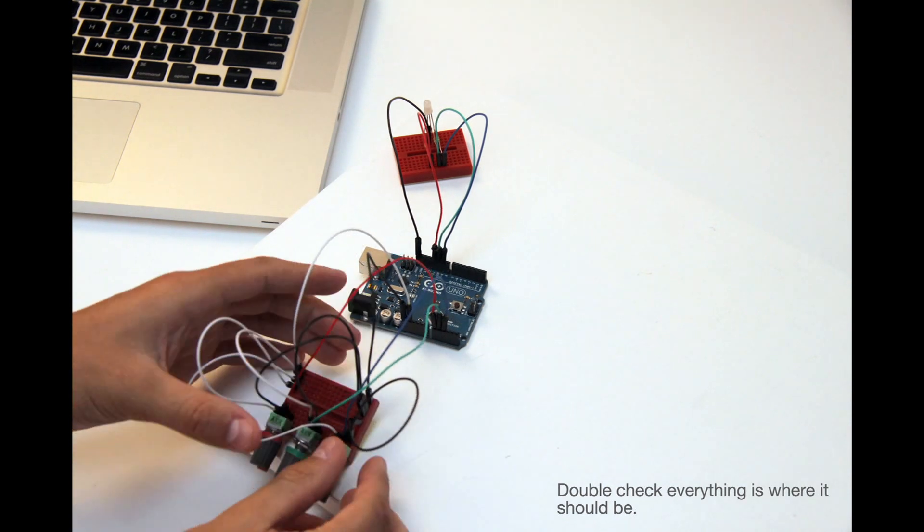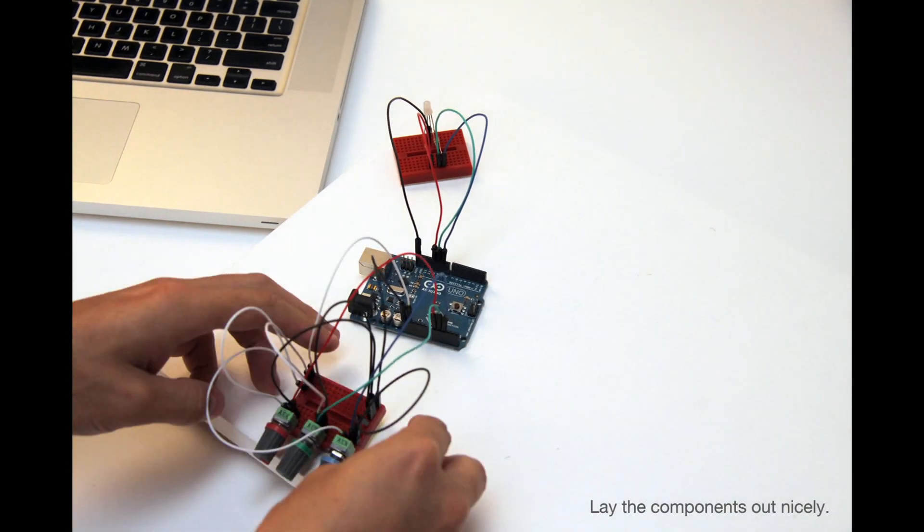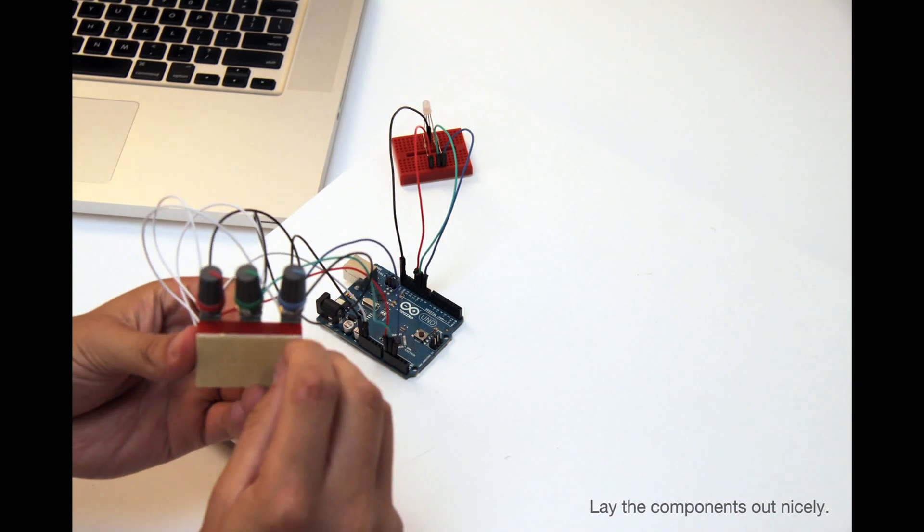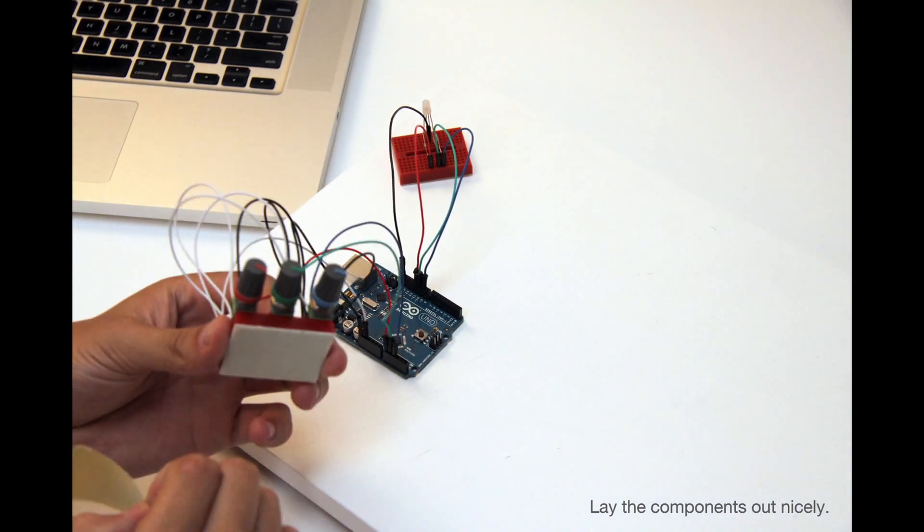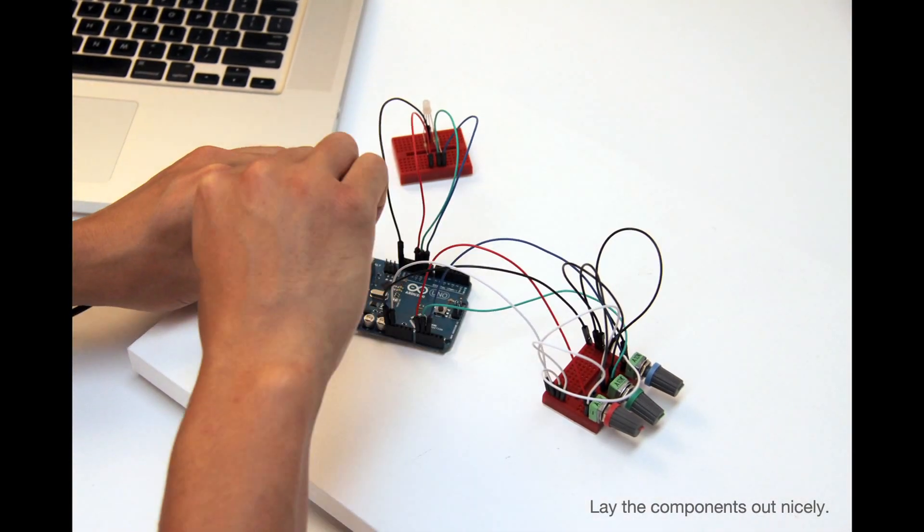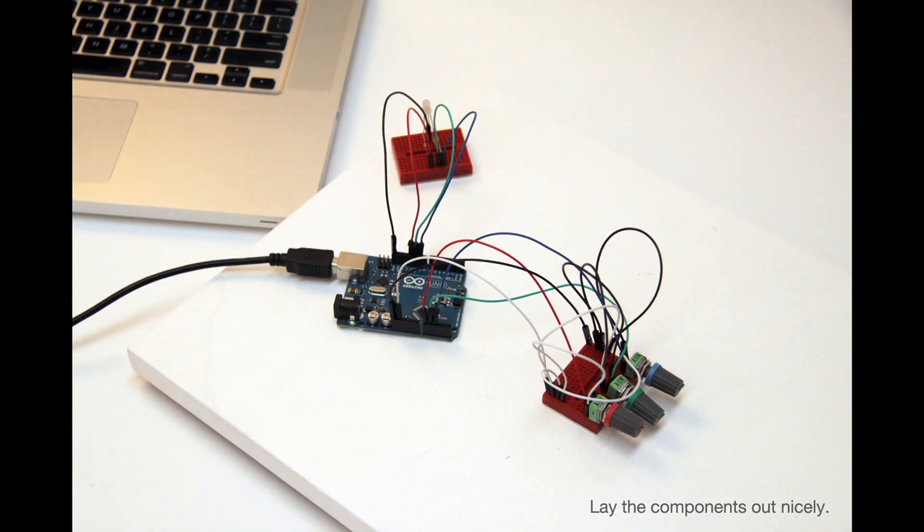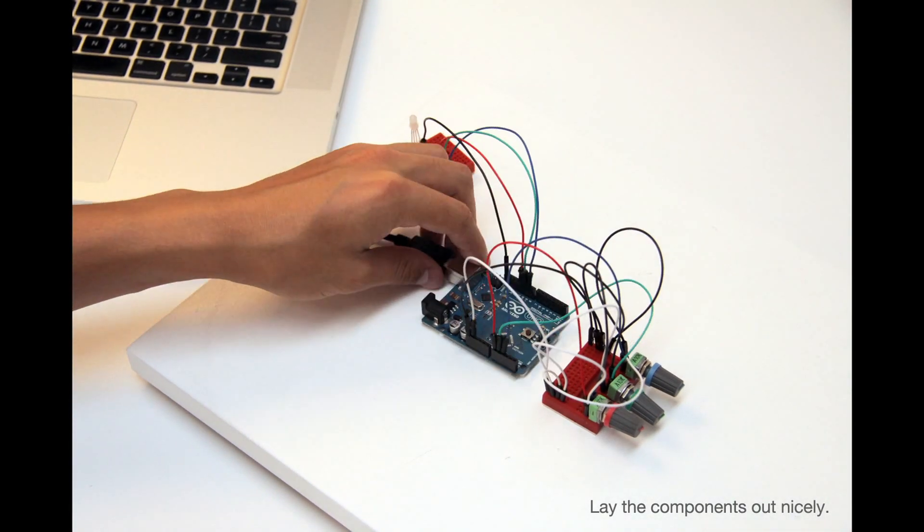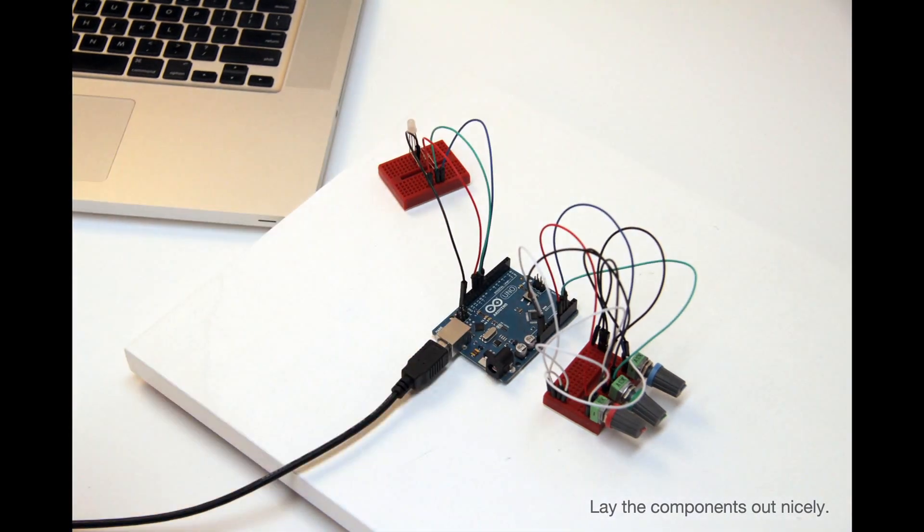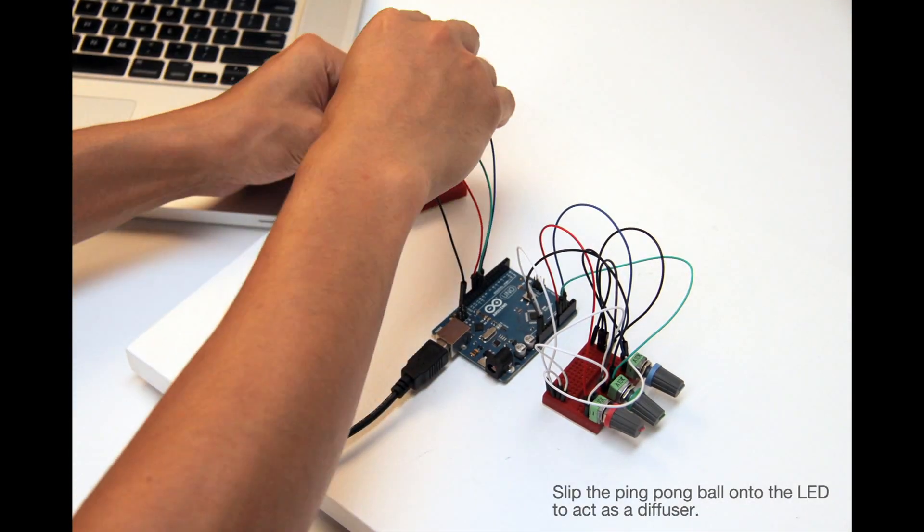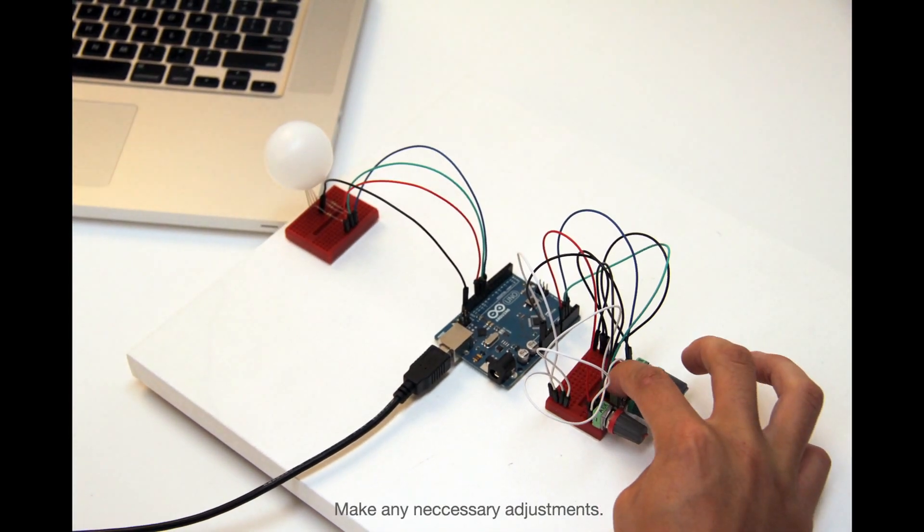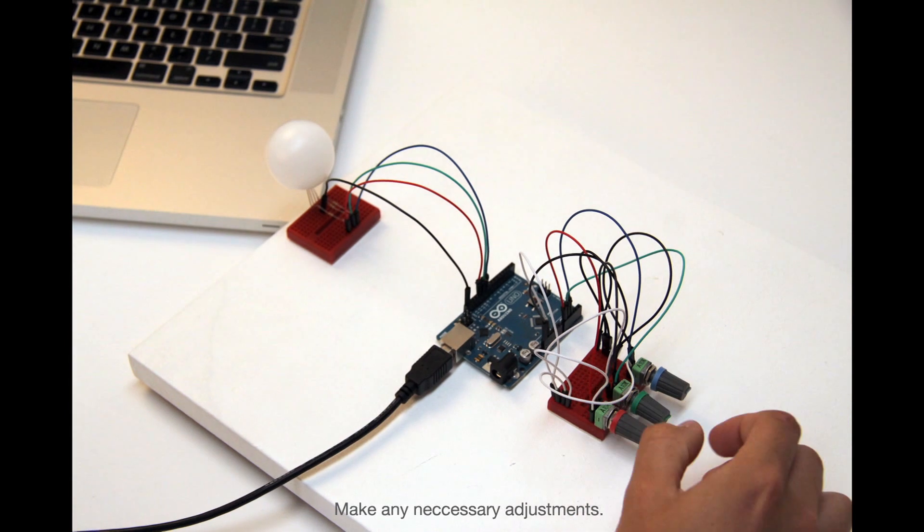It's always safe to double check that everything is fine and in the right place. Lay out all the components neatly and perhaps stick the potentiometer board down on a sturdy surface. Plug in the USB. Gently slip on the ping pong ball onto the LED. Check that everything is fine one last time. Now we're ready for coding.